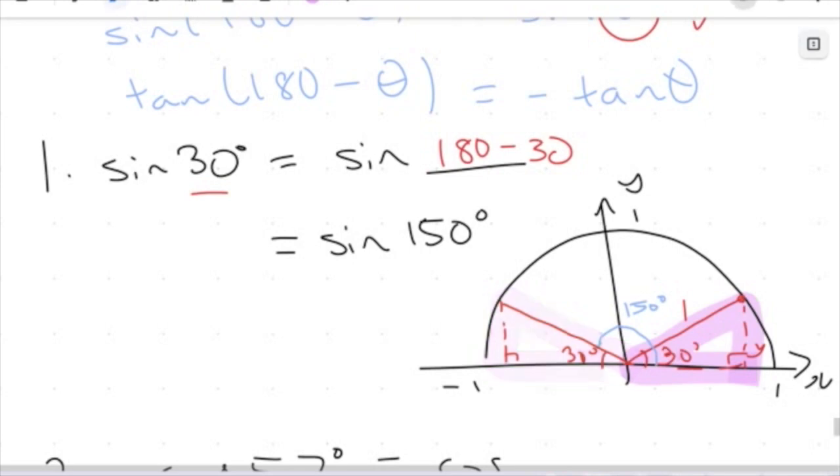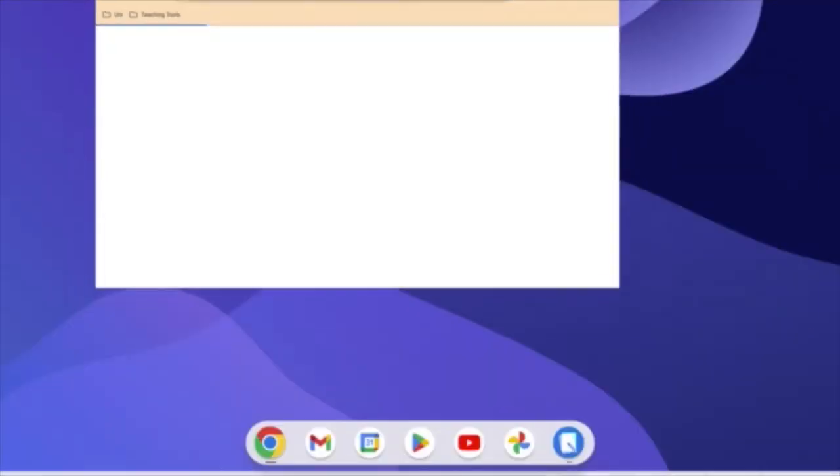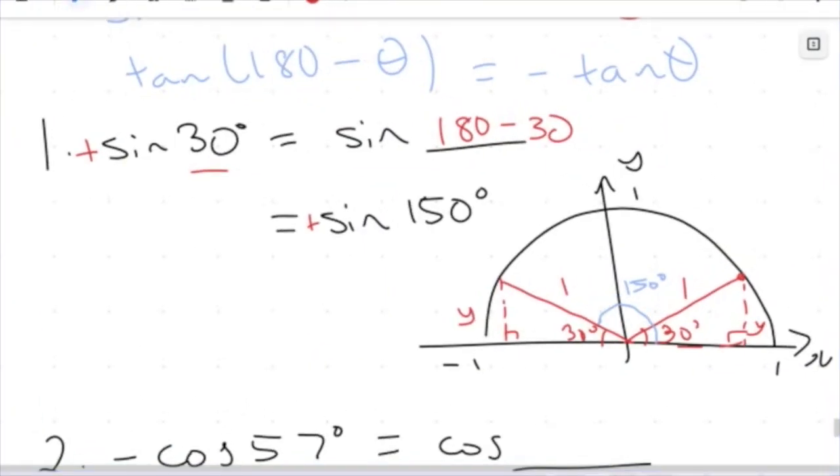Now in the second quadrant, we said that the sign was positive. So that means that the reason that is, is because we still have a positive y value. So the ratio is still going to be some positive y over the hypotenuse of 1. So this checks out. This is why I have a positive here and a positive here. And you can just double check this by popping sin of 30 and sin of 150 into your calculators, and you should get the exact same thing.